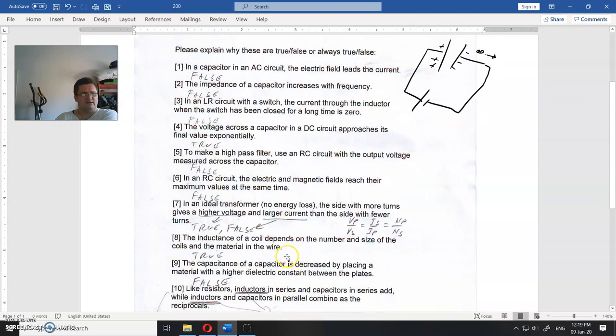On the eighth, the inductance of the coil depends on the number and size of the coils, the material, and the wire path. Of course, that is right in the equation for inductance. L is equal whatnot, L, E, omega, and whatnot, and you will see that it depends on that, of course.